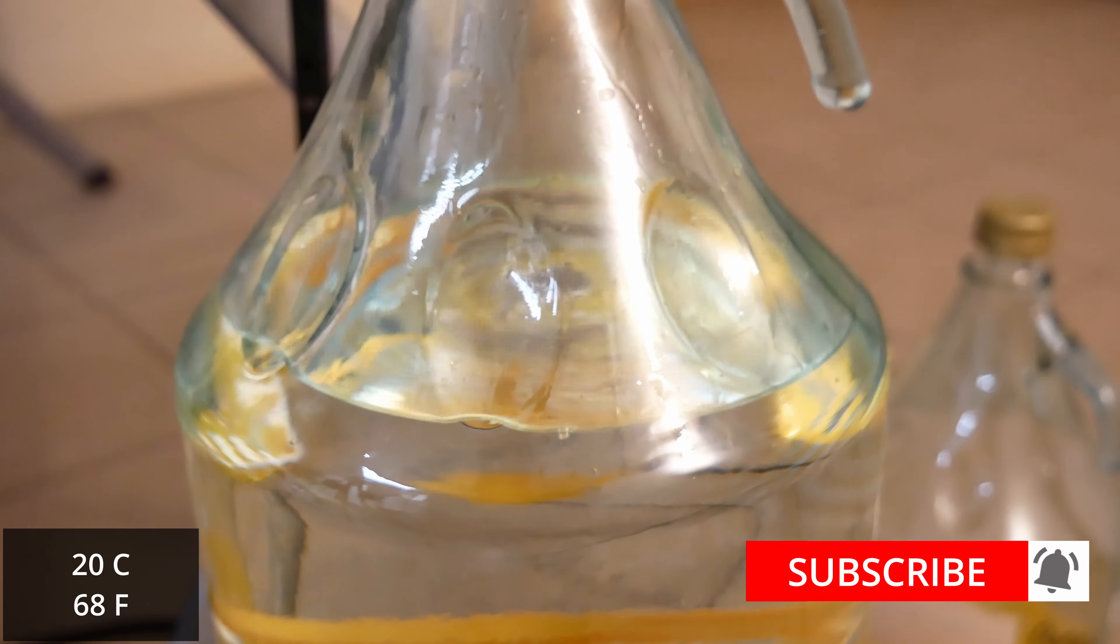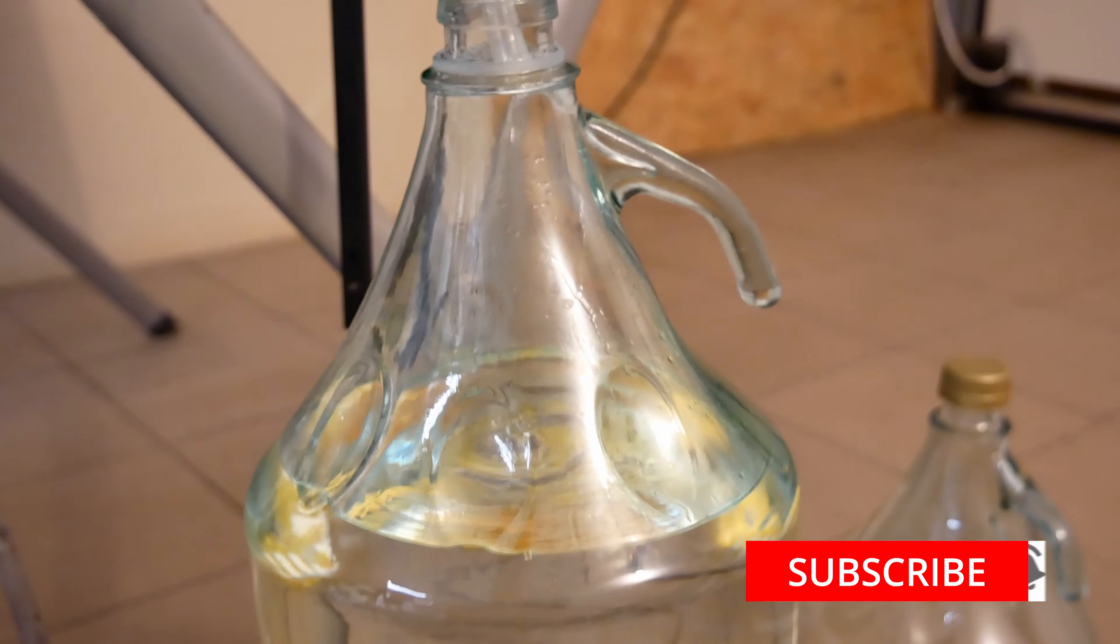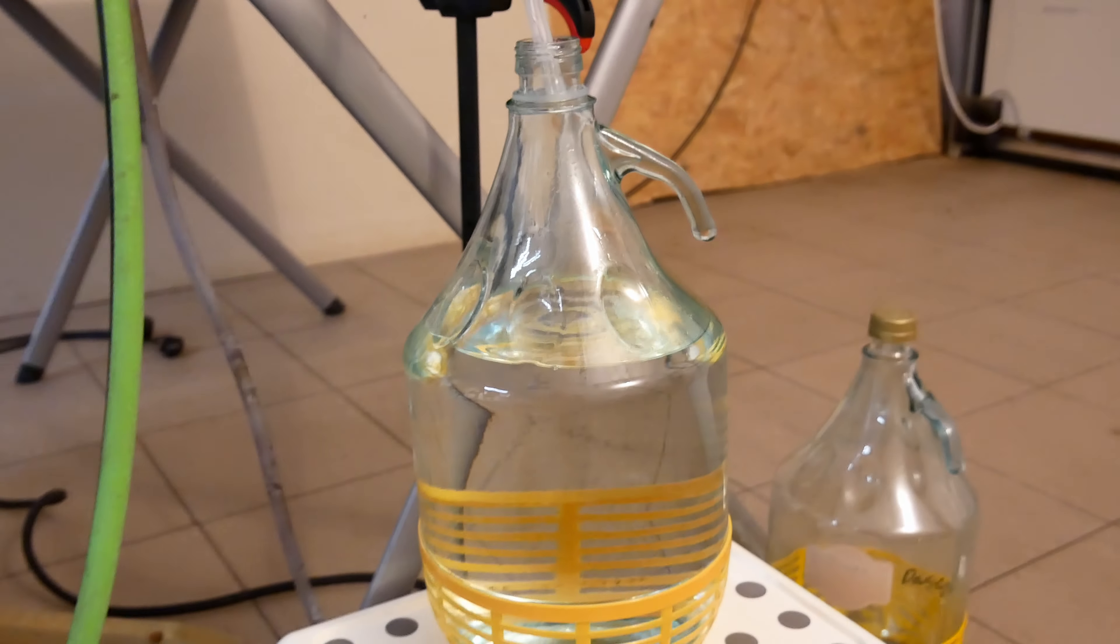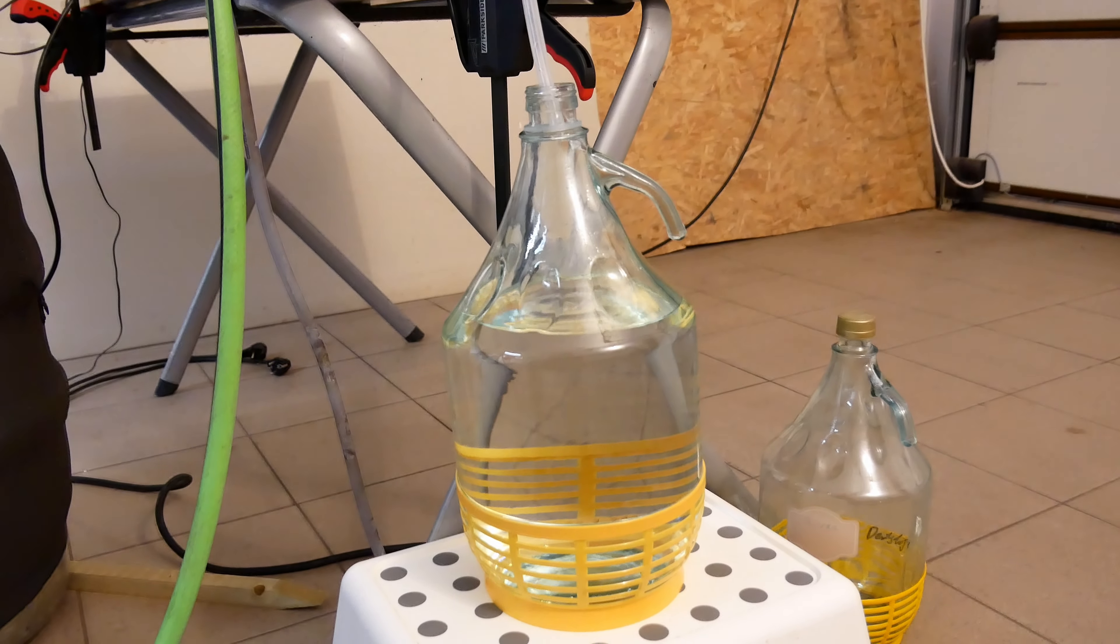This is the end of the first part of the video about pot still distillation on the column still. In the second part we will divide the alcohol into fractions. If you like the video leave a thumbs up and a comment. I also invite you to subscribe to my channel.